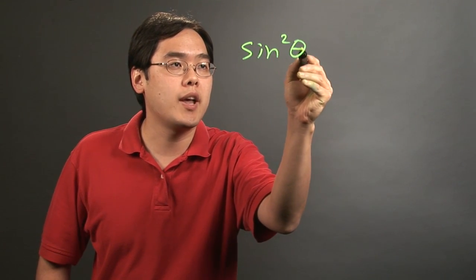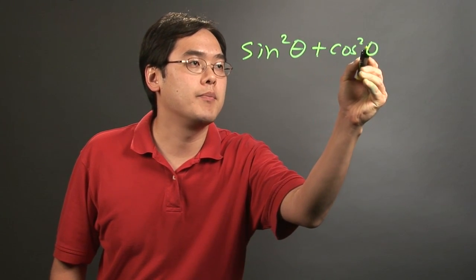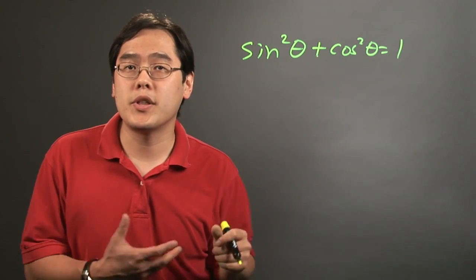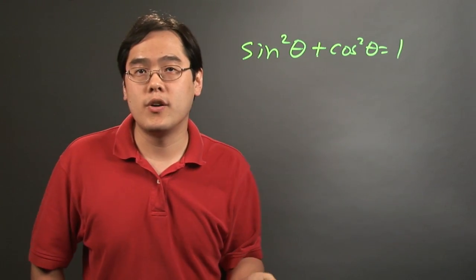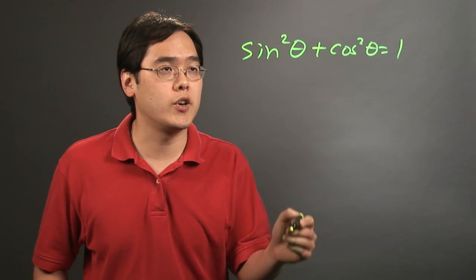You're all aware of the Pythagorean identity: sine squared theta plus cosine squared theta equals 1. Now what you want to think about is, depending on the directions, what you want to solve for. Do you want to solve for sine or cosine? Suppose you want to solve for sine.